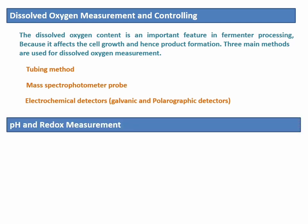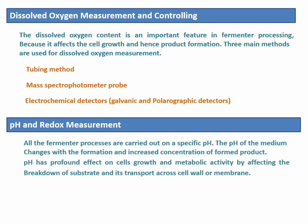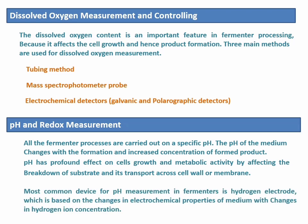Another factor is pH and redox measurement. Any fermentation process is performed at an optimized pH because the pH of the medium affects the growth and metabolic activity of microbial cells. During the fermentation process, pH changes due to product formation. Therefore, sensors such as hydrogen electrodes are installed in fermenters to observe pH, based on changes in the electrochemical properties of the medium, which change with the change in hydrogen ion concentration in the liquid.